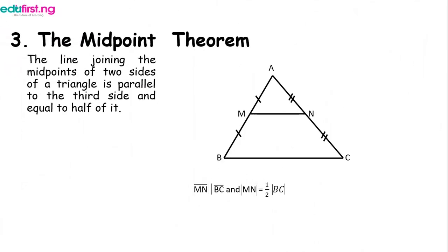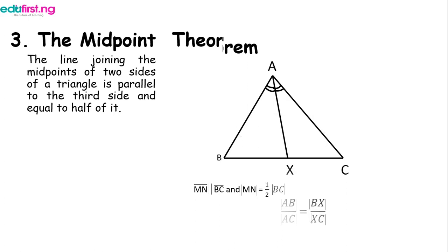The next theorem is the midpoint theorem. It states that the line joining the midpoints of two sides of a triangle is parallel to the third side and equal to half of it. In triangle ABC, if line MN joins the midpoints of sides AB and AC, then MN is parallel to BC and MN equals half of BC.